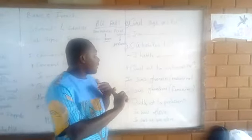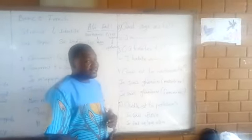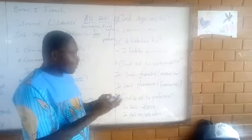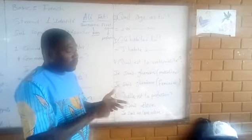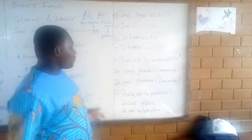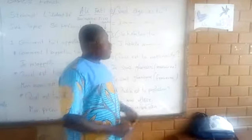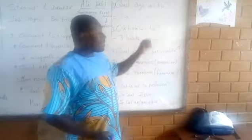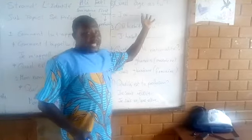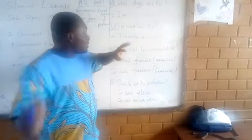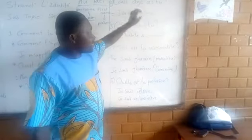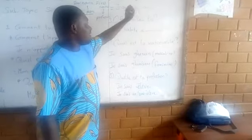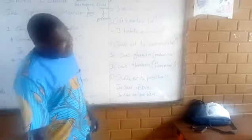You learn about numbers and how to count. So please write the number that corresponds to your age — if you are 6, you put 6; if you are 7, you put 7; if you are 8, you put 8; if you are 9, you put 9; if you are 10, you put 10. Okay.